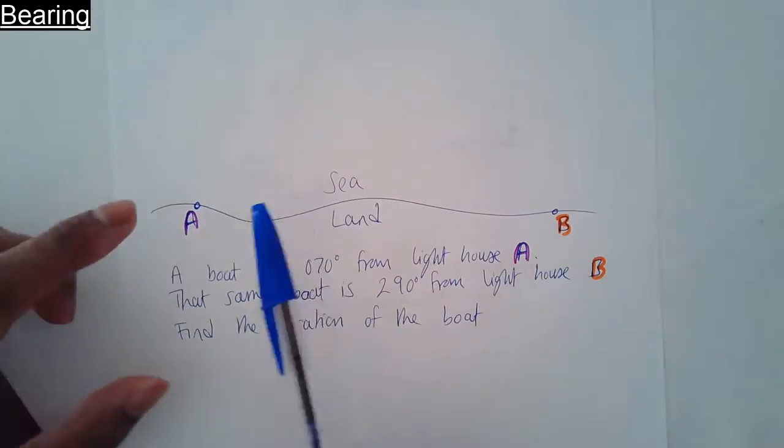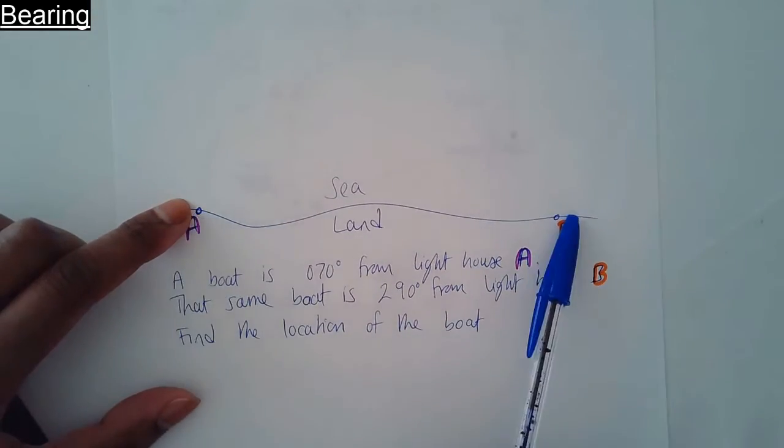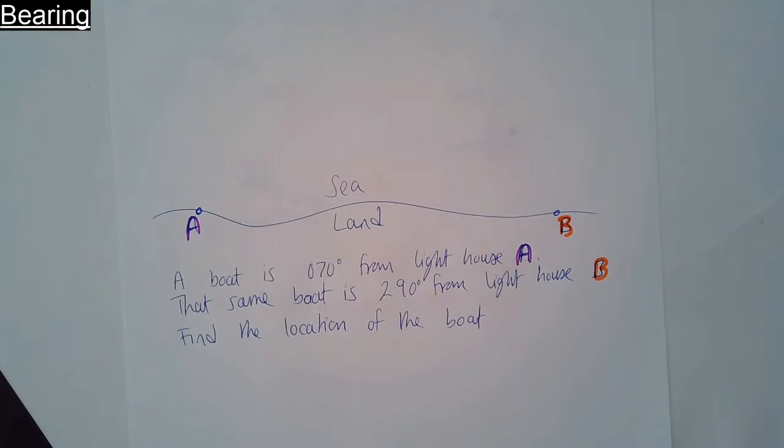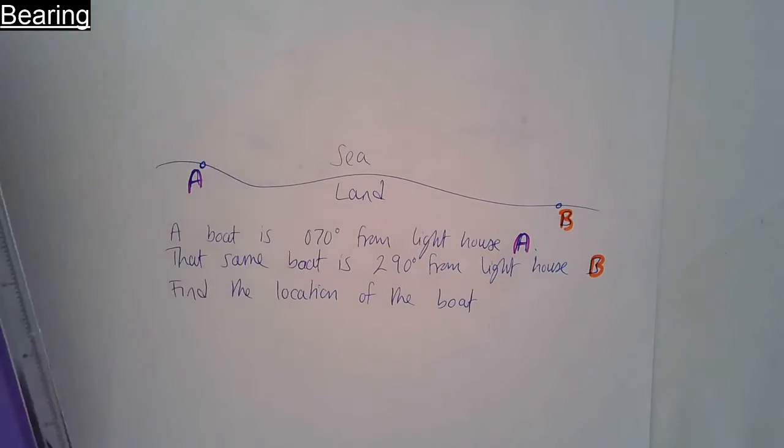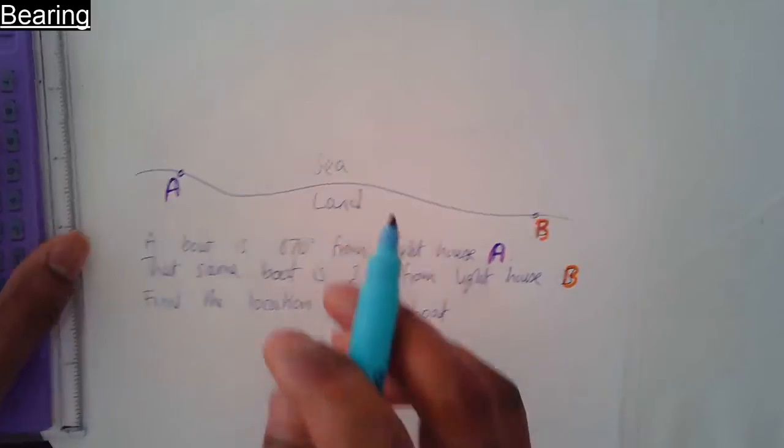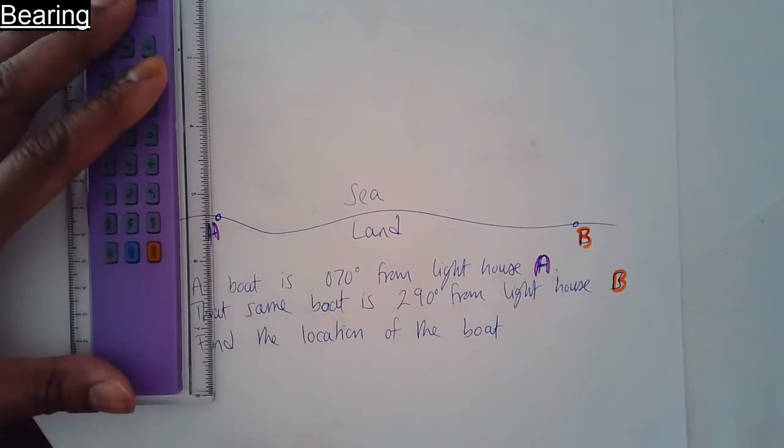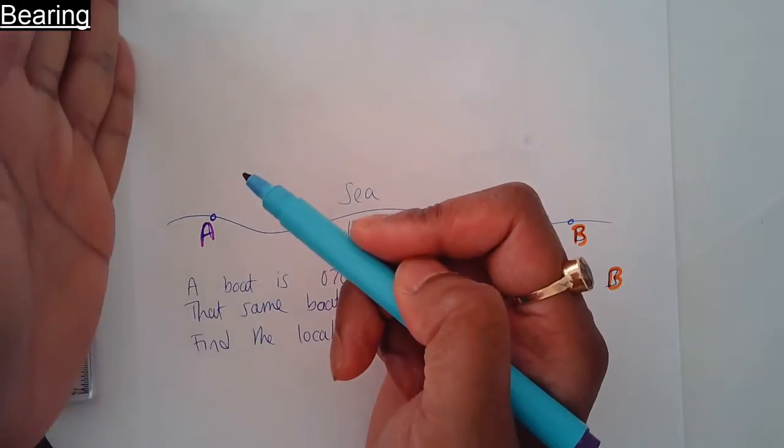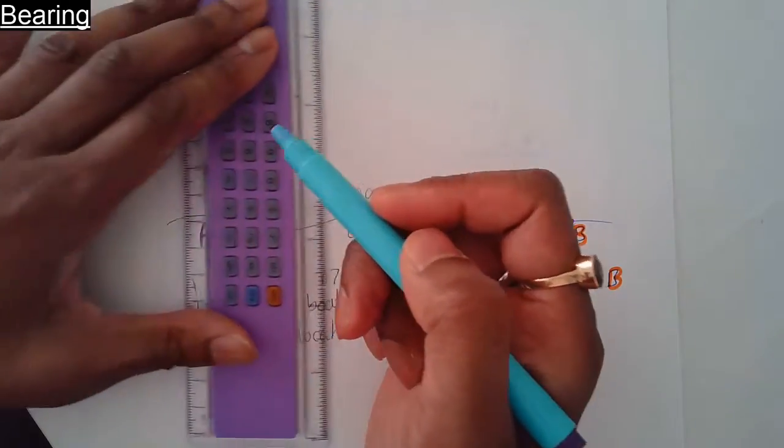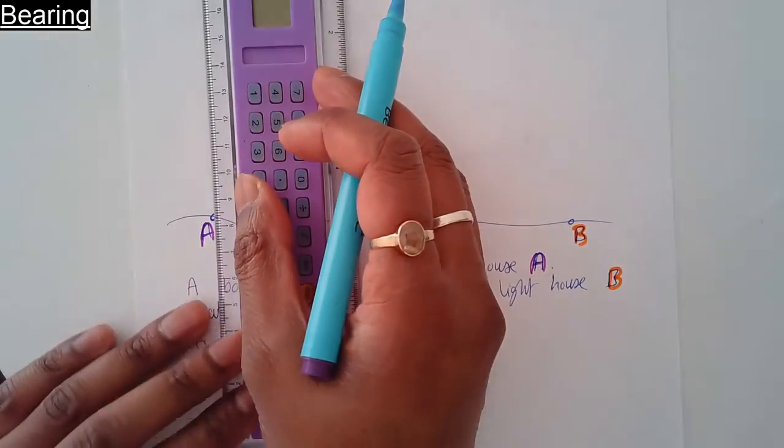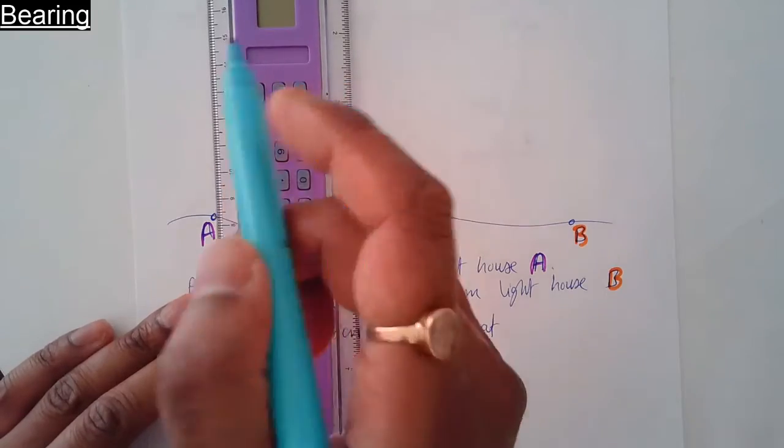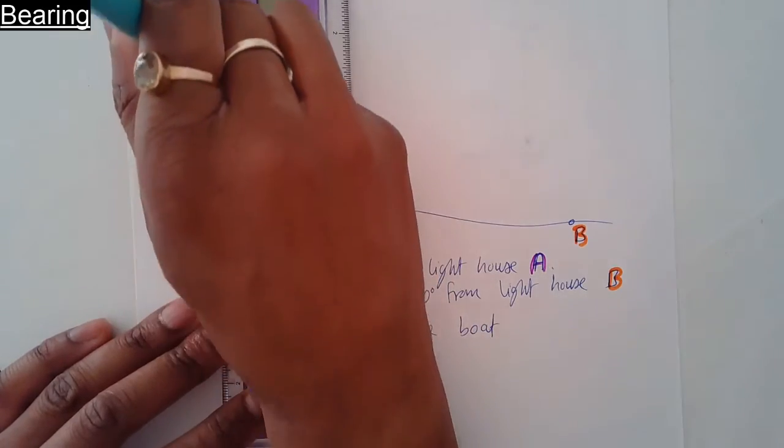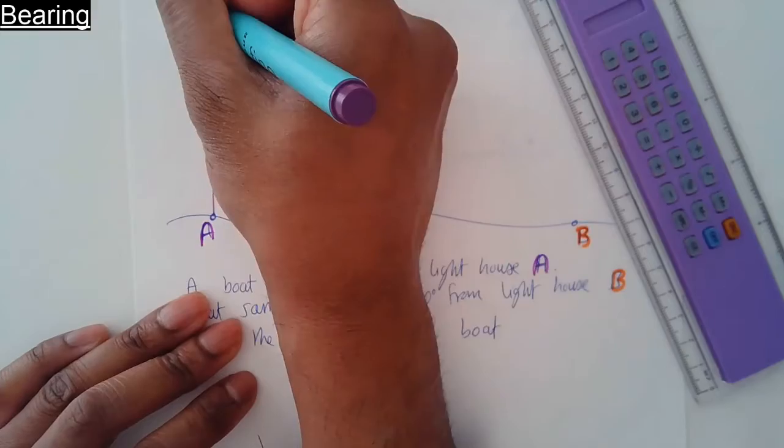This side we've got the sea, this side we've got the land, lighthouse A, lighthouse B. What you do first is draw a north line. Remember, the north line has to be parallel to the edge of the paper.